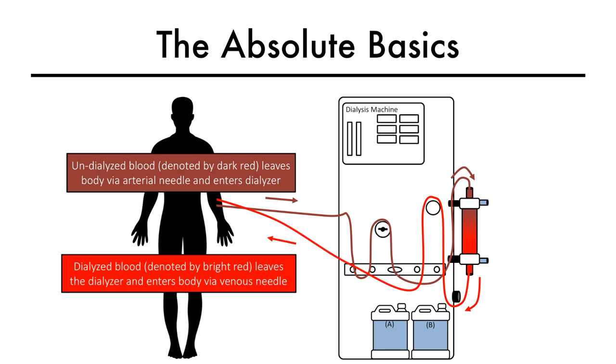Dialyzed blood, denoted by bright red, leaves the dialyzer at the venous end and enters the body via the venous needle, which is placed proximal to the arterial needle in the patient's arm.